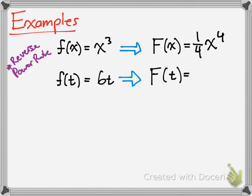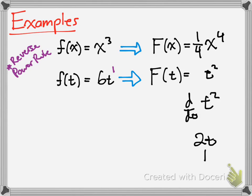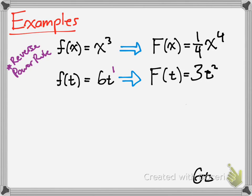Next: f of t equals 6t. What's the antiderivative? Same thing — add 1 to the exponent. Since the exponent's already at 1, 1 plus 1 is 2, so t has a power of 2. Now you figure out how to get the derivative to be 6. Right now with t squared, the derivative would yield 2t, but you want 6t. So you just multiply by 3. That means 3 goes there. There's a general rule for taking the antiderivative — the reverse power rule — and I'm going to write that down.